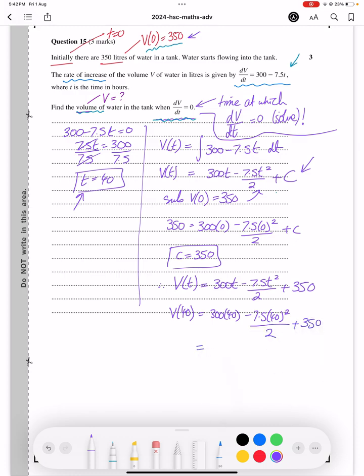When you solve that, that gives you 6,350 litres of water at t equals 40 hours. And that is how to solve this question.